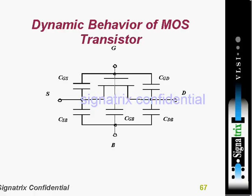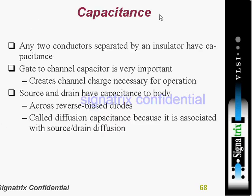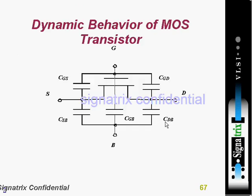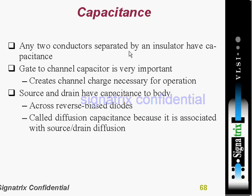This is the dynamic behavior of the MOS transistor — these capacitances come into picture when you are changing transition times, not static. Gate to bulk is one. Any two conductors separated by an insulator have a capacitance. So gate to channel capacitor is very important.